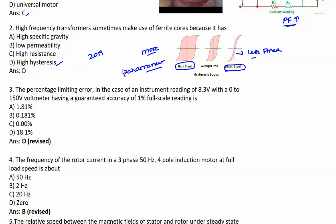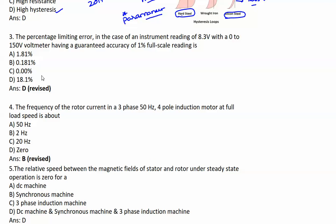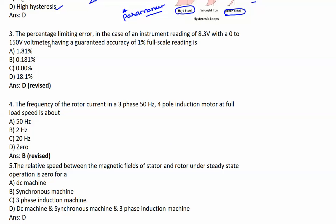Third question is from the measurement subject: The percentage limiting error in the case of an instrument reading of 8.3V with a 0 to 150V voltmeter having a guaranteed accuracy error of 1% full scale reading is - What is the meaning of this? Guaranteed accuracy error is 1%.